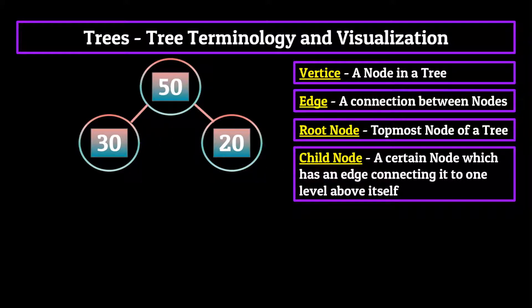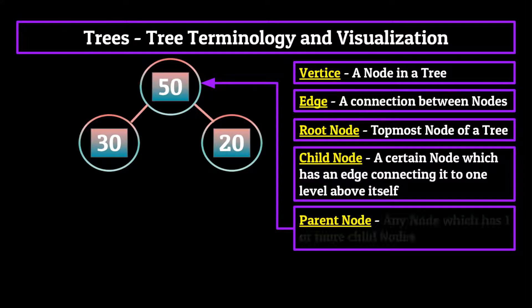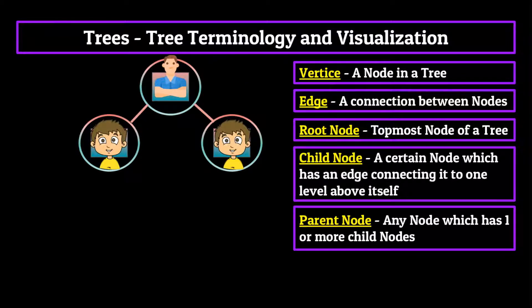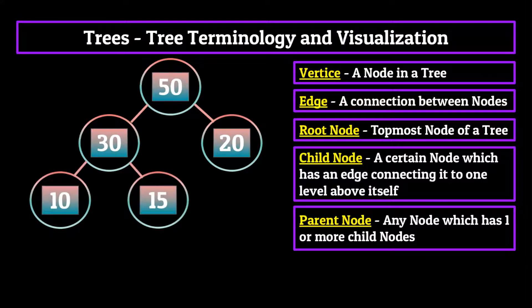Vice versa, the root node, the vertex containing the integer 50, is now what's known as a parent node to these two child nodes. Thus, we can define a parent node as any node which has one or more child nodes. Think back to our family tree example. If we were using people instead of integers, it would make a lot of sense that the nodes directly connected to each other have some sort of familial relationship.